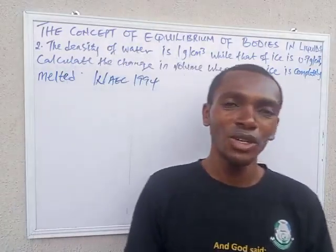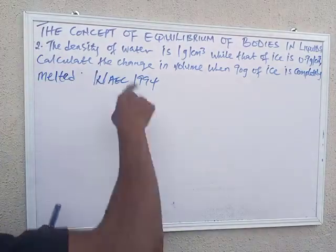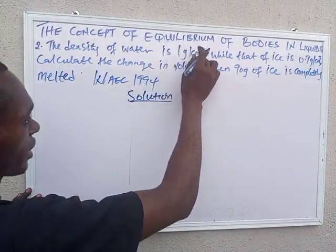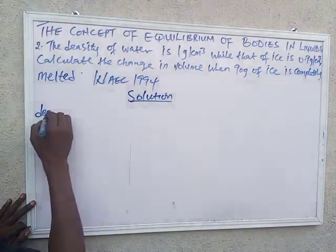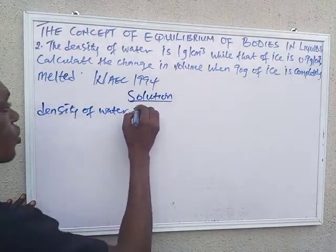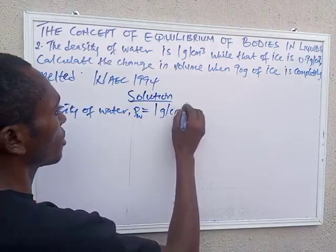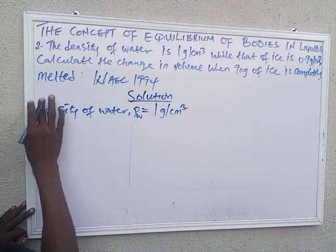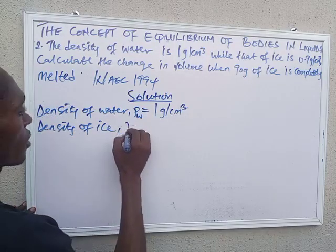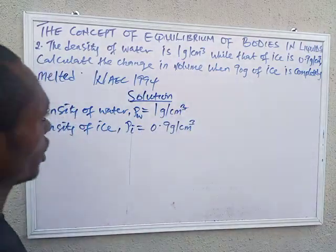Welcome to today's tutorial. We are still looking at equilibrium of bodies in liquids. We have a question from 1994. The density of water is 1 gram per centimeter cube, and the density of ice is 0.9 grams per centimeter cube.